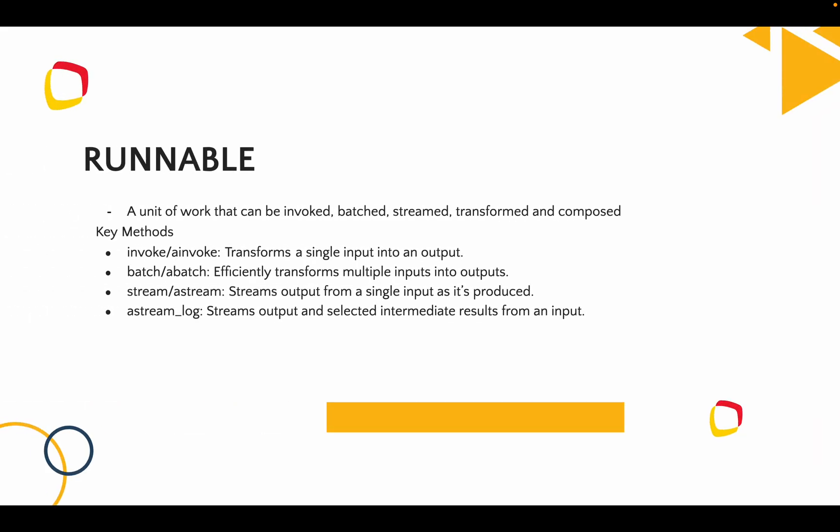In this video we'll see how to create a chain and a runnable component. All those components get this kind of feature because they are inherited from Runnables. Most of the major components are inherited from the Runnable interface — for example, chat models are inherited from Runnables directly or from subclasses of Runnables. A Runnable is a unit of work that can be invoked, batched, streamed, transformed, and composed.